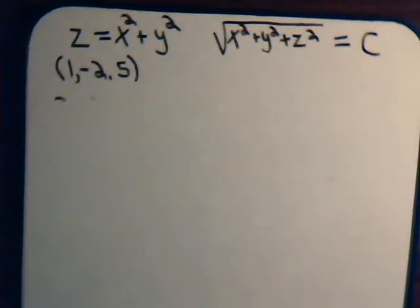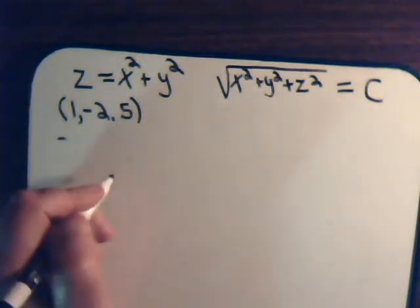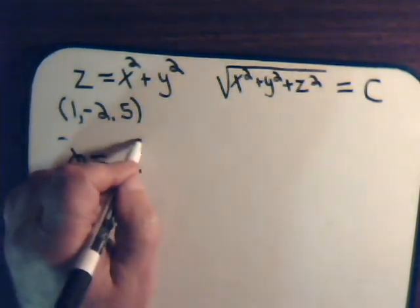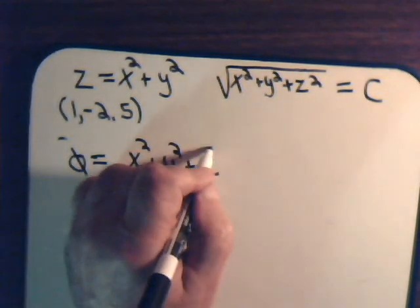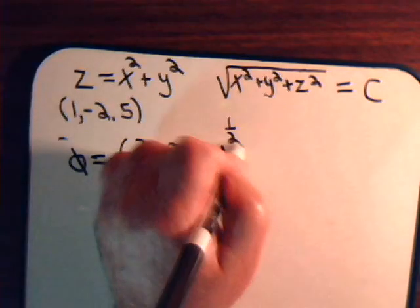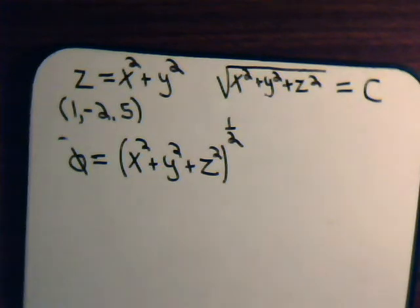Here we have the square root of x squared plus y squared plus z squared equals a constant. So our scalar function ψ equals x squared plus y squared plus z squared to the one-half power, equal to a constant. This is a three-dimensional surface — in this case, a sphere. So let's find the unit normal vector for our sphere.